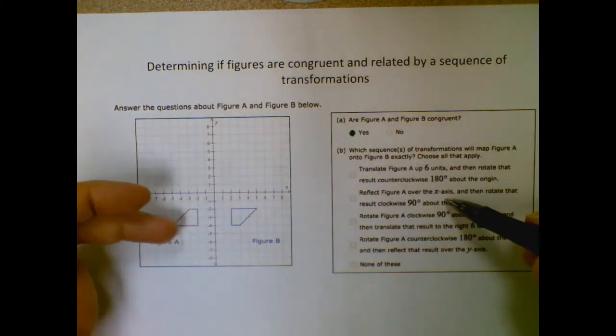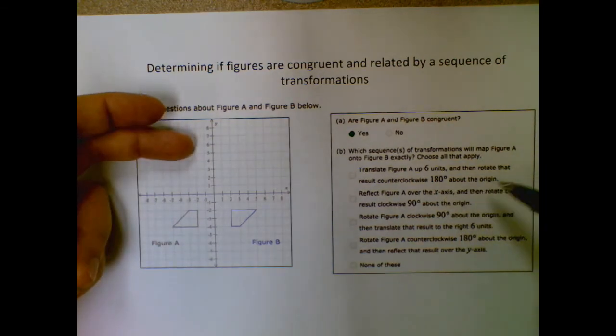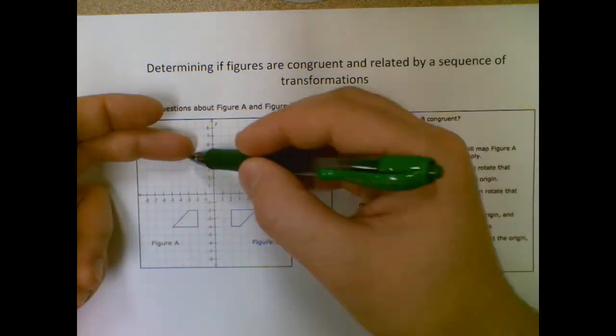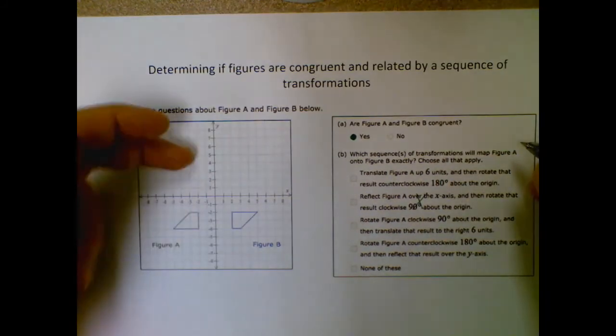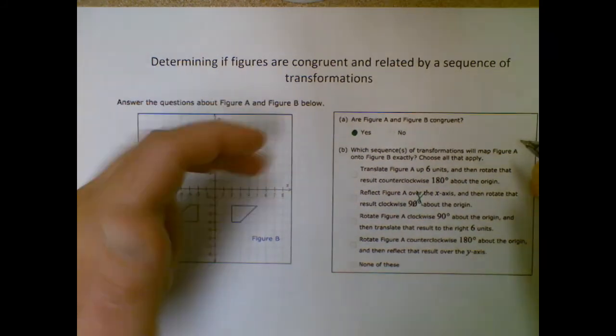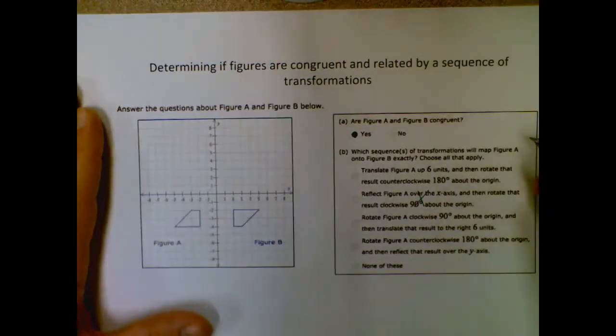Reflect it over the x-axis. That would be up there. And then rotate 90 degrees clockwise. That won't work because if I'm up here, rotate 90 degrees clockwise, that would be this quadrant, not that one. So that can't work.